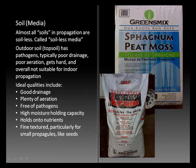The next topic is media — the material that roots grow into. Almost all soils or media used in propagation have no actual soil in them; they're called soilless media. Outside topsoil is loaded with pathogens, may have poor drainage, poor aeration, and gets hard and compacted — overall not suitable for indoor plant propagation. Instead, soilless media is used, with desired qualities including good drainage, plenty of aeration, and freedom from pathogens.